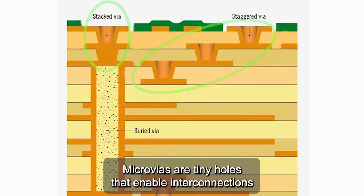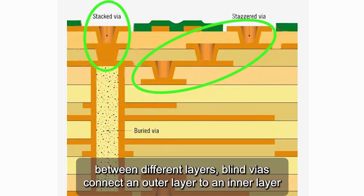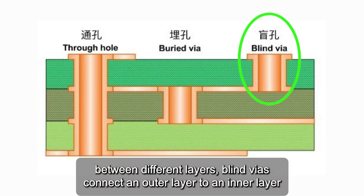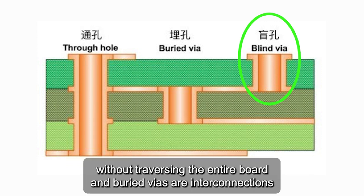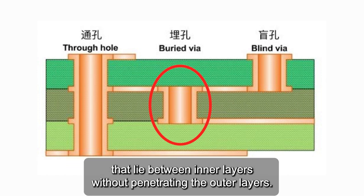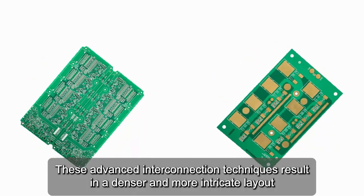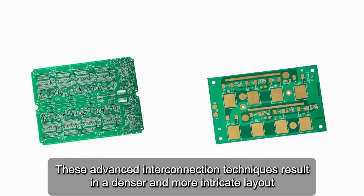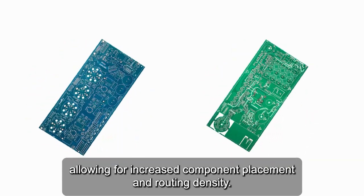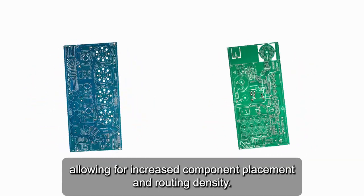Microvias are tiny holes that enable interconnections between different layers, blind vias connect an outer layer to an inner layer without traversing the entire board, and buried vias are interconnections that lie between inner layers without penetrating the outer layers. These advanced interconnection techniques result in a denser and more intricate layout, allowing for increased component placement and routing density.